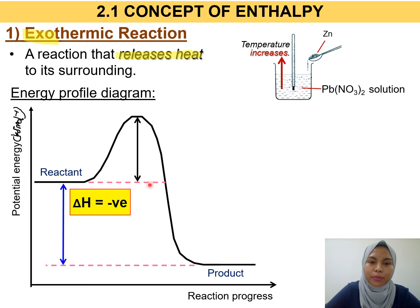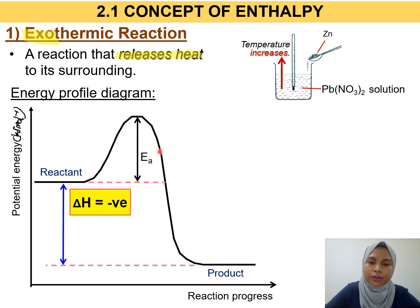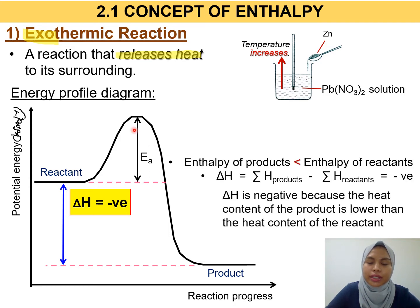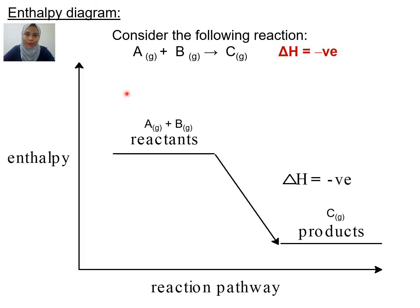The point between the potential energy of the reactant and the maximum potential energy in the diagram is the activation energy. Don't forget to label this as well. This is the energy profile diagram for an exothermic reaction.